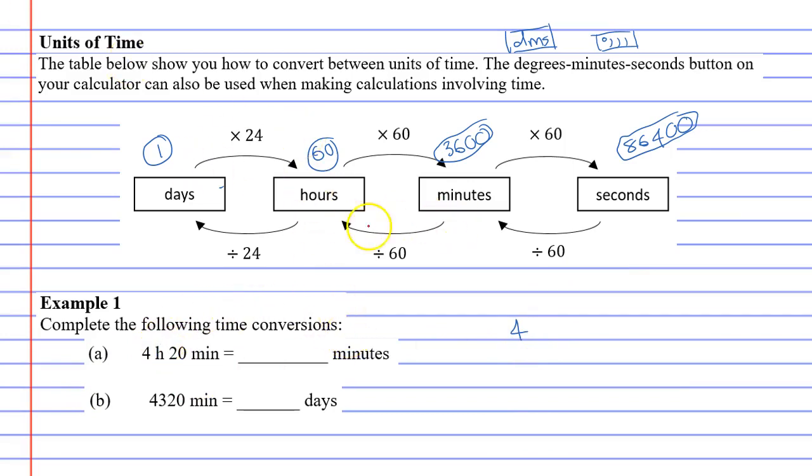We're going to look at our diagram. If I'm going from hours into minutes, it tells me to times by 60. So 4 times 60, which is 240. So 4 hours is 240 minutes.